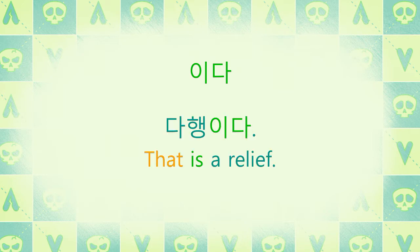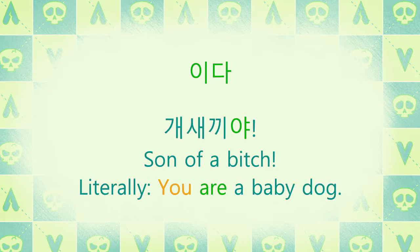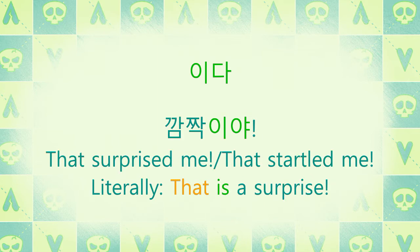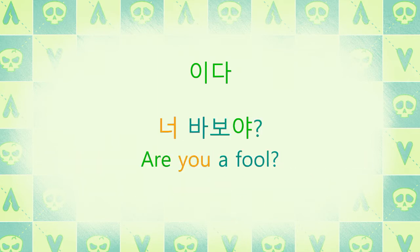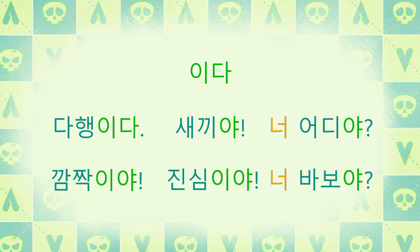Let's go back to previous videos and look at sentences I've given you and I'll show you where 이다 is. 다행이다. 너 어디야? 새끼야. 개 새끼야. 깜짝이야. 너 바보야? 진심이야! If we take these phrases and line them up, you can see some similarities, some patterns.